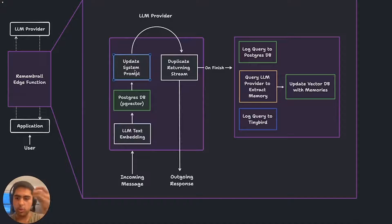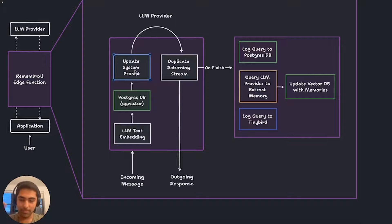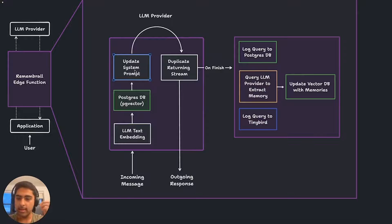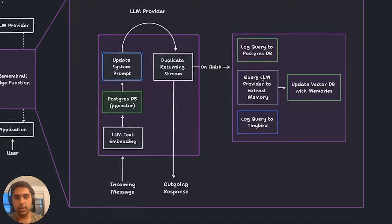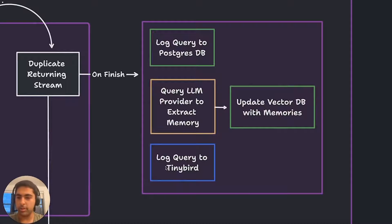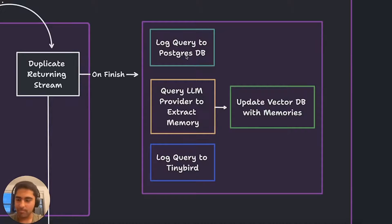Once the LLM provider responds with a stream, I do something interesting: instead of returning the stream directly to the user, I duplicate the stream — I split the returning stream of text into two different pipes. One pipe goes straight back to the user; the other pipe is listened to, and while it's waiting for the LLM response to finish, I just wait. The beauty of running on Vercel's edge network is that while I'm waiting, I'm not paying anything for edge function execution. As soon as it's finished, I log this query to TinyBird — a real-time database I learned about from open source Next.js apps like Dub.sh — and I also save the queries into my Postgres database, which lets me open up queries in my dashboard later on.